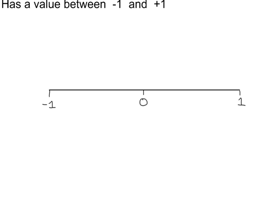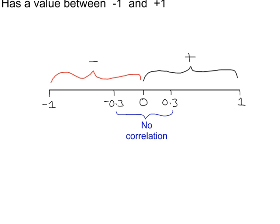The PMCC has a value between minus 1 and plus 1. The region between minus 0.3 and plus 0.3, we typically say there is either very weak correlation, or there's no correlation. For positive values, the correlation is positive. For negative values on this scale, the correlation is negative.